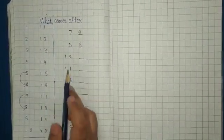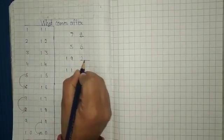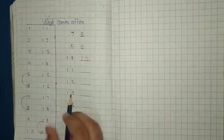One nine. Nineteen. Nineteen ke baad mein twenty. Two zero. Twenty. Next.